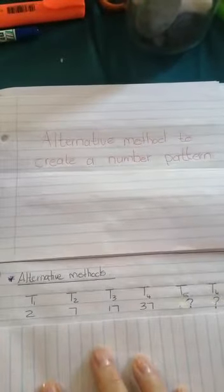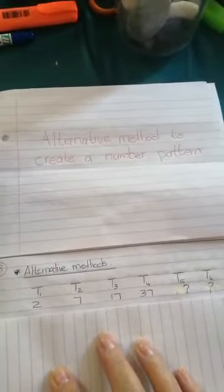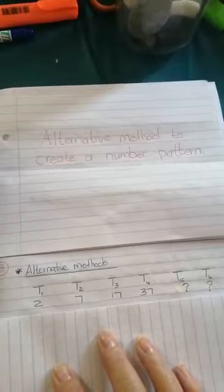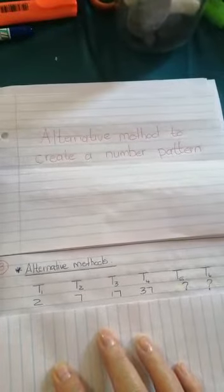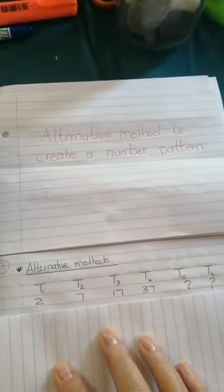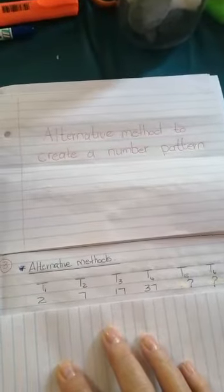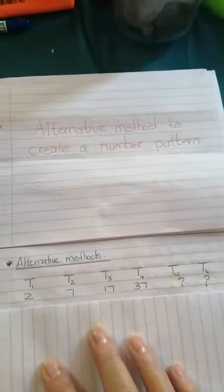We are going to look at the sequence 2, 7, 17 and 37. That is only four terms of the sequence and we would like to calculate 5 and 6 and the rest of this sequence.